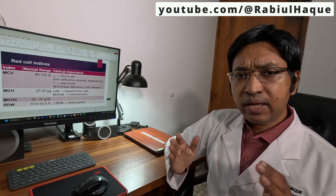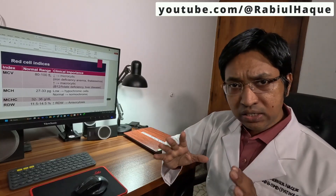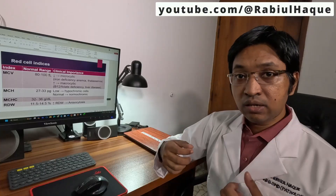Now we will move on to the most important red cell parameter — the red cell indices. The first one is MCV, mean corpuscular volume, which is the average volume of the red blood cells. The normal range is between 80 to 100 femtolitres. When the red cells are smaller, we will see a decrease in MCV. For example, if MCV is 68, it indicates that the average volume of the red blood cells is less than normal, so most of the cells are microcytic. Causes of microcytosis include iron deficiency anemia and thalassemia — it points us in a direction, but we need further tests to confirm.